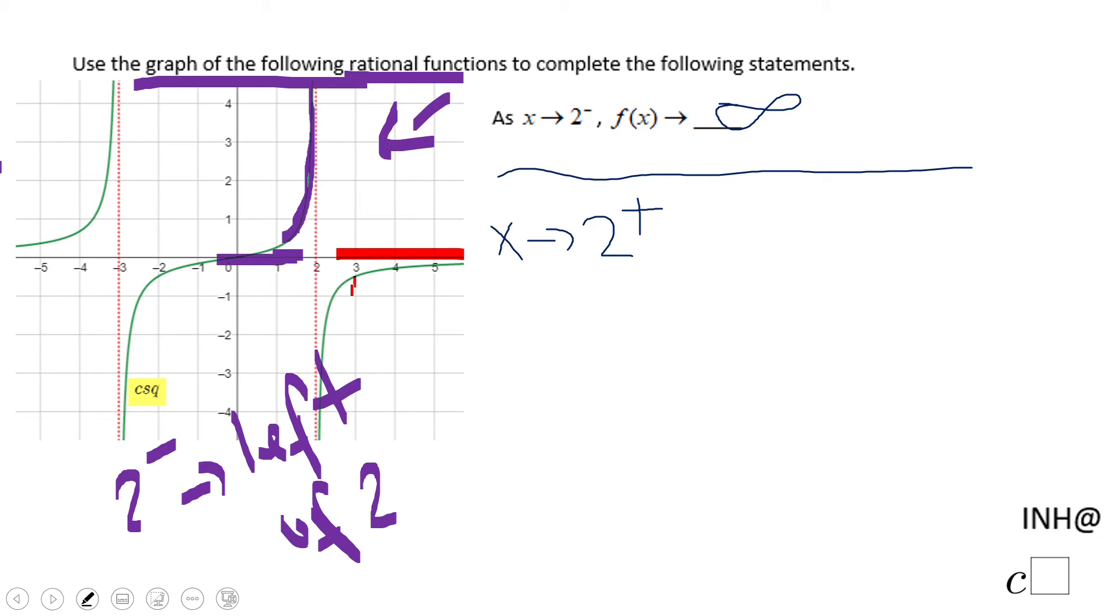And if you notice, the graph goes down. So two plus means right side of two.